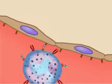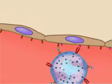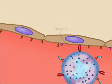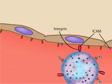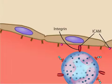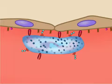Inflammatory signals trigger these rolling neutrophils to express adhesion molecules called integrins on their surface. The integrins lock onto adhesion molecules called ICAM1 and VCAM1 on endothelial cells. The tight adhesion stops the rolling and the neutrophils begin to stretch out along the endothelial surface.